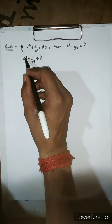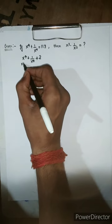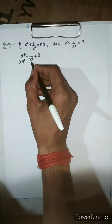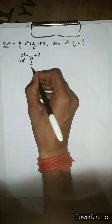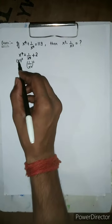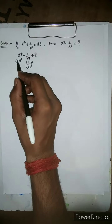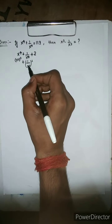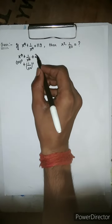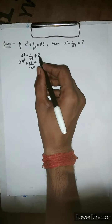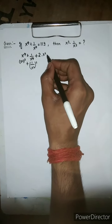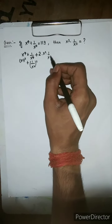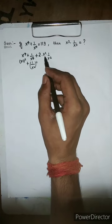Here we have x raised to the power 4, that is x² raised to the power 2, and here we have 1 over x⁴, that is 1 over x² raised to the power 2. So we have a² + b² form. If we add 2, we multiply 2 by x² and also 1 over x² — x² and x² cancel each other, so we have 2.